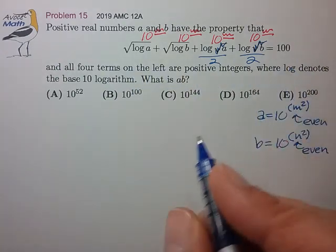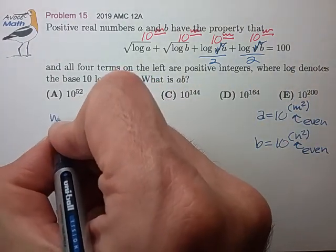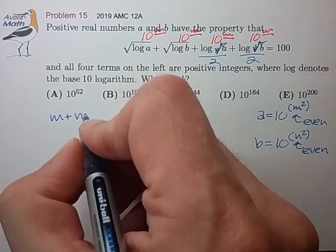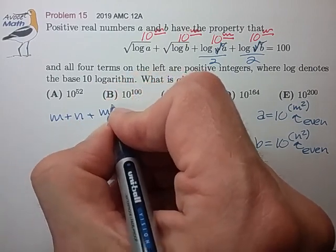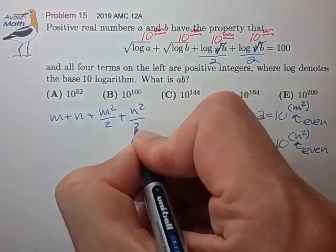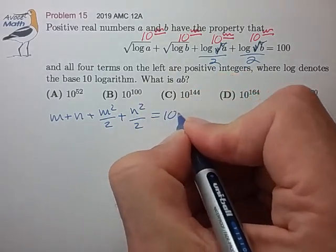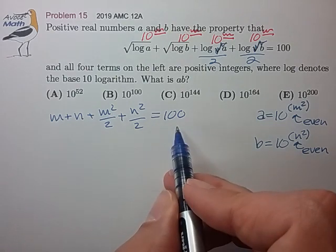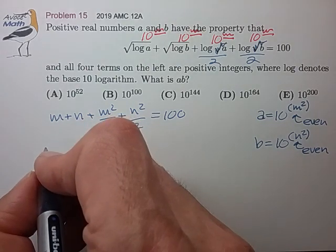Plugging into the original equation we'll have that m plus n plus m squared over 2 plus n squared over 2 is equal to 100. Let's multiply out by 2 and rearrange a little bit.